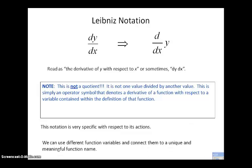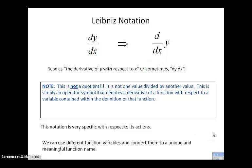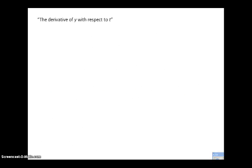This notation is very specific with respect to its actions. It tells us many things about our function: it tells us what's our independent variable and what's our dependent variable. It tells us we are going to have a function y that is given to us as some mathematical manipulation on the independent variable x. So we determine a lot just from this Leibniz notation — we know which is the independent variable and which is the dependent variable.